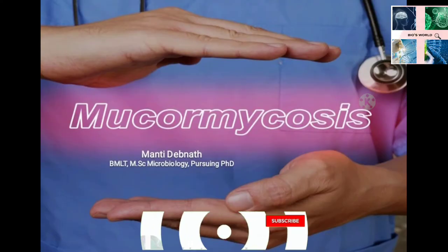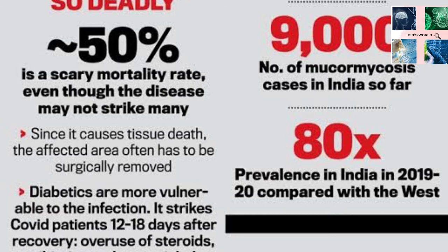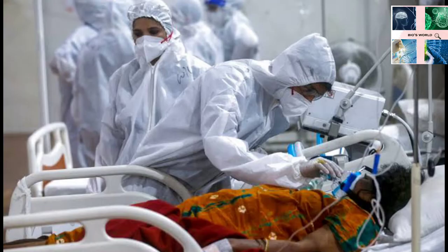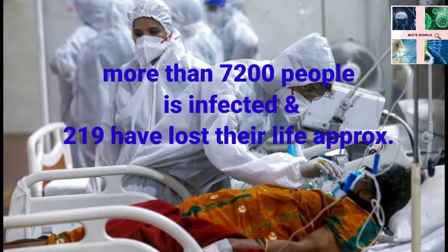Today's topic is mucormycosis. It is a fungal disease with a 50% mortality rate. It can affect patients initially in the nose, but the fungus can then spread into the brain and other parts of the body. It is usually a rare disease, but more than 7200 people in India have now been reported with mucormycosis, among them 219 have lost their lives. This is mostly seen in COVID-19 patients. The infection usually occurs in immunocompromised individuals with one or more underlying conditions.